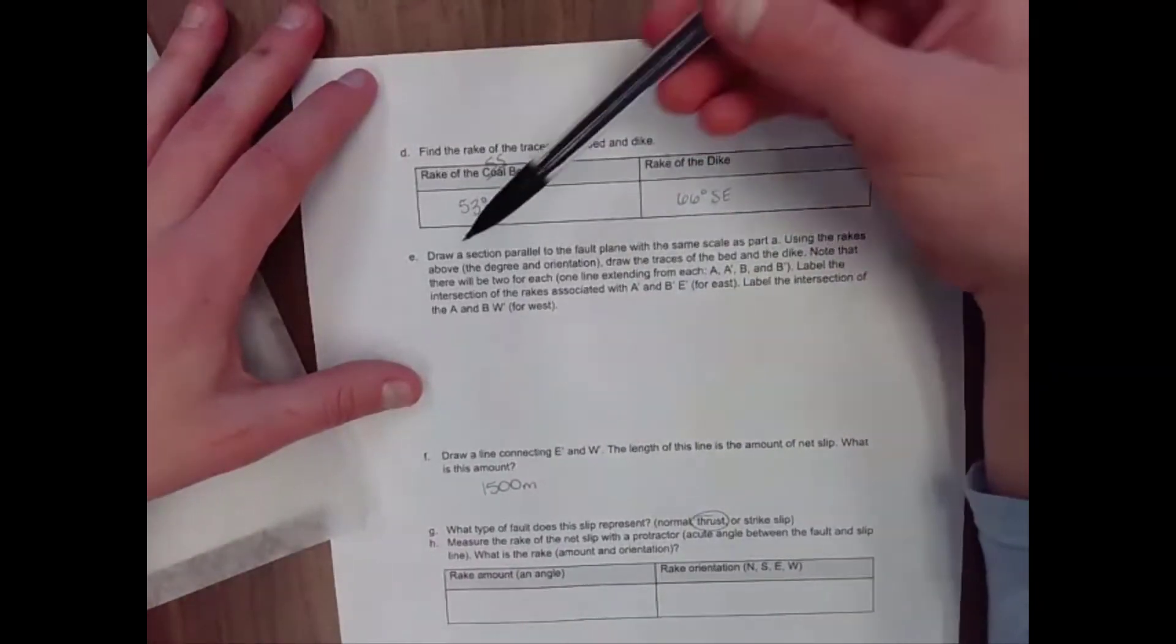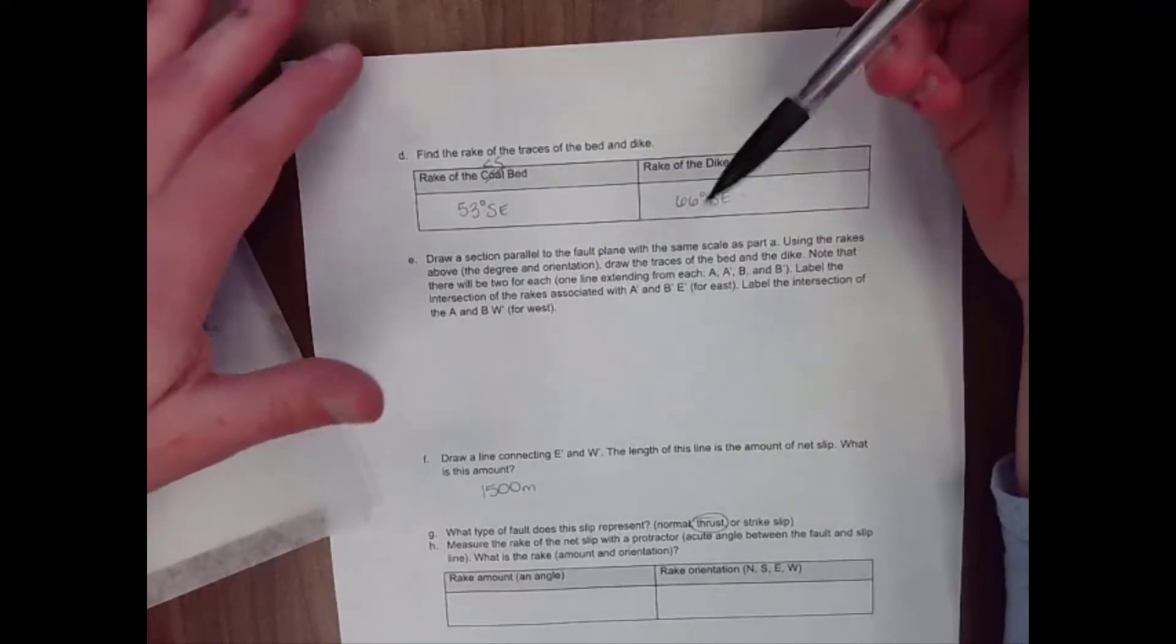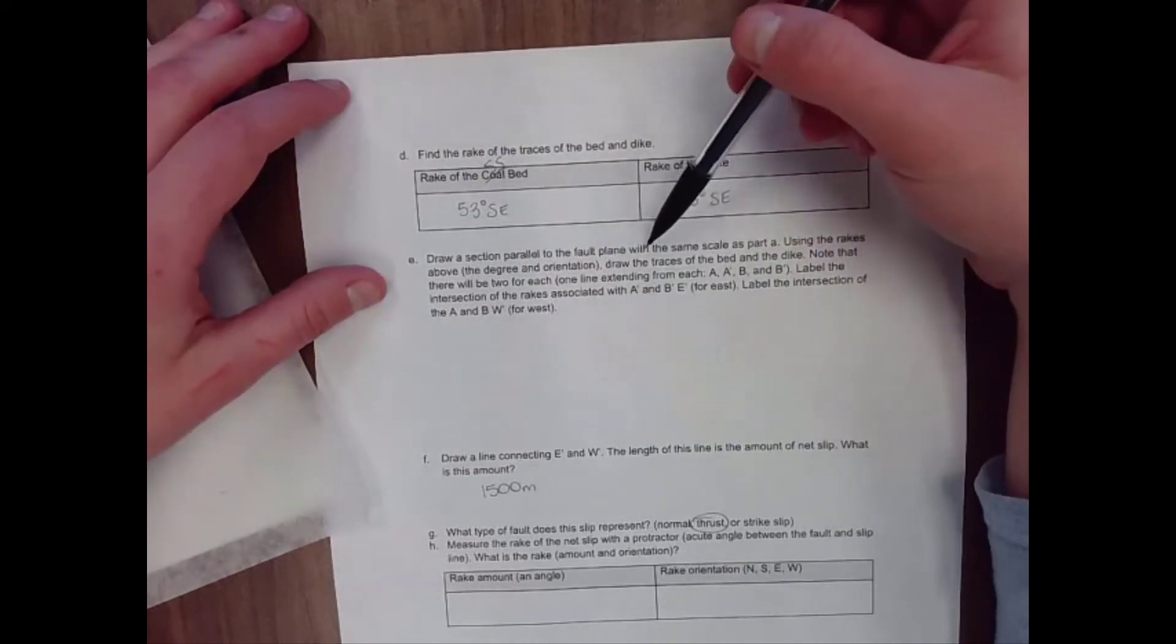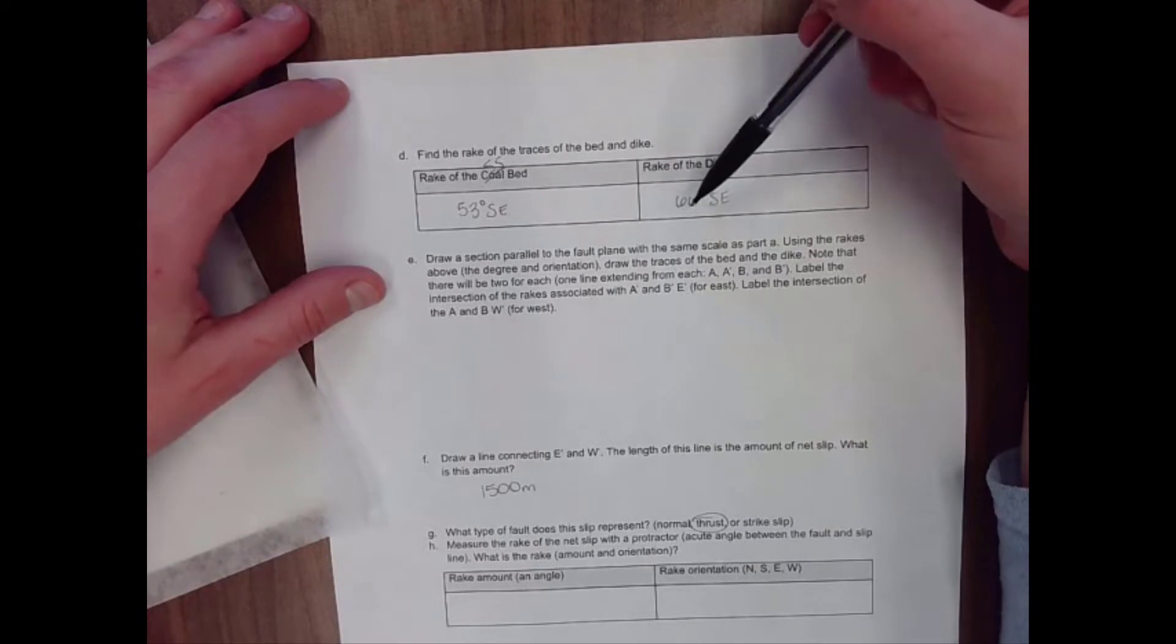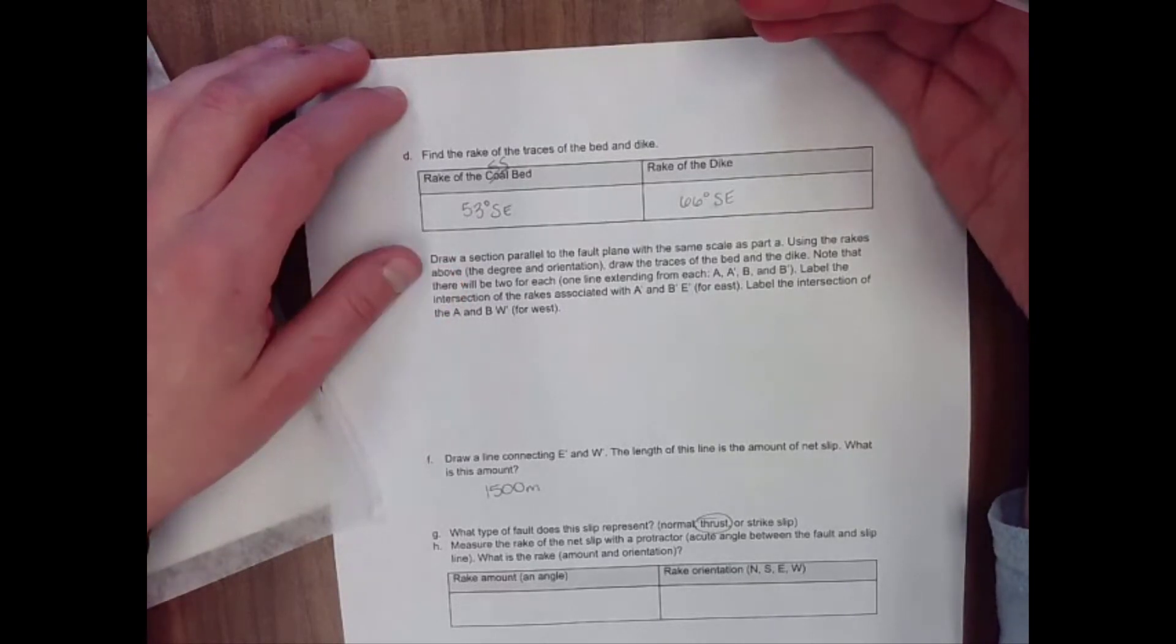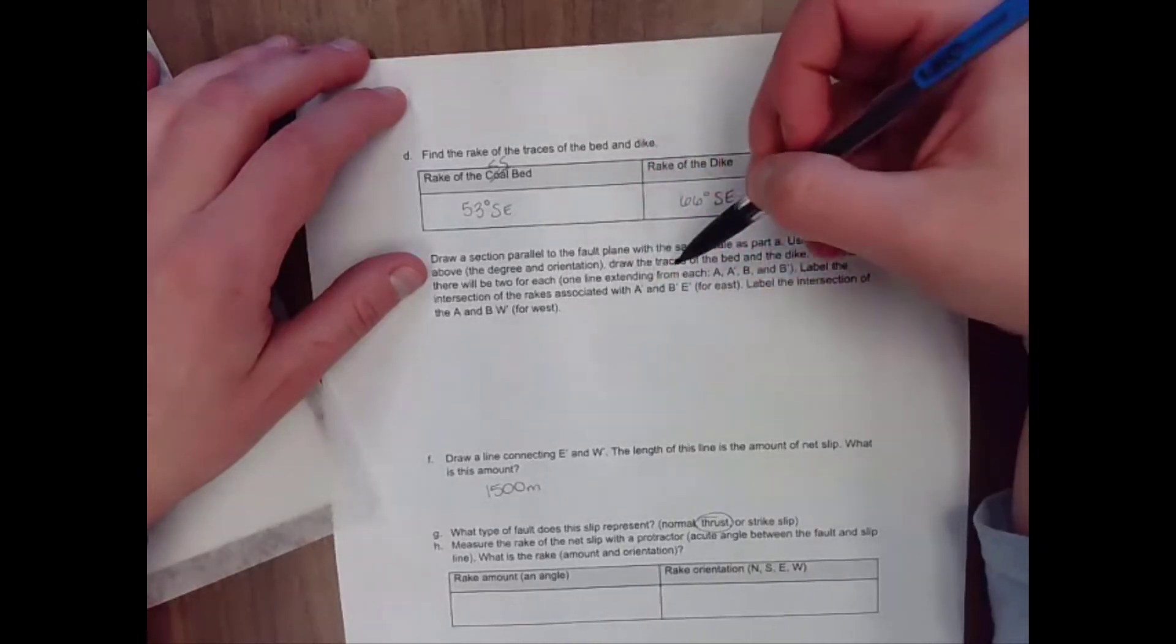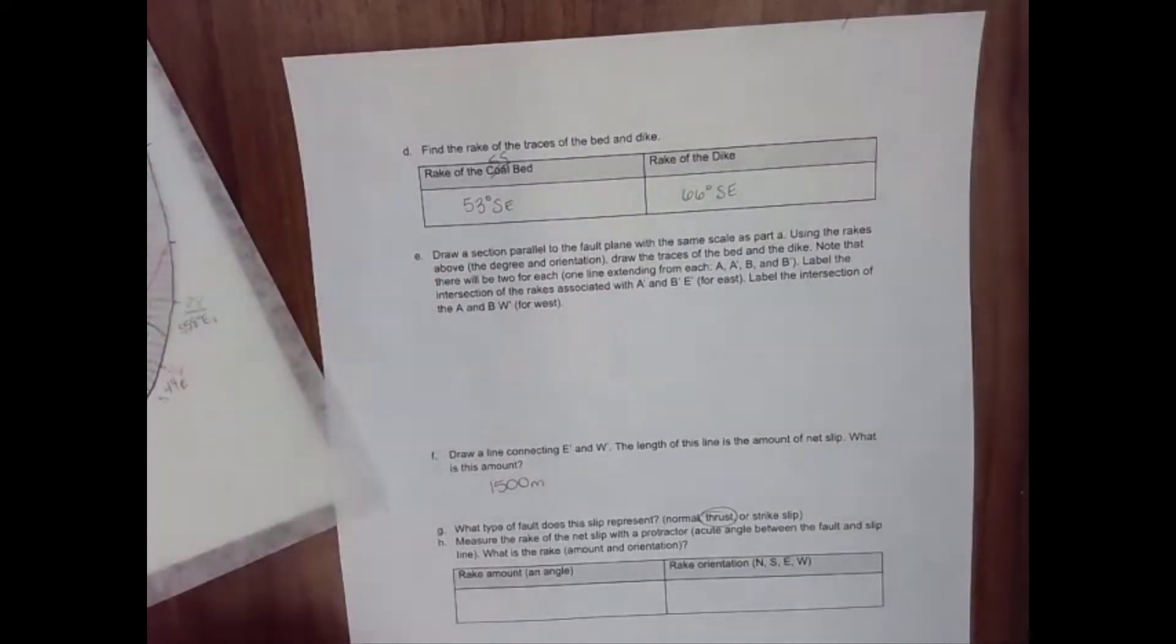Now, to get to our final answer, we have to draw a section parallel to the fault plane. So almost like a projection of both sides of the fault plane onto one plane with the same scale as part A. We're going to use these rakes. Now, remember, rakes are distance from strike, not distance from north. Angular distance from strike. Note that there will be two for each one line intersecting from each A, A prime, B, and B prime. So let's go ahead and do this.